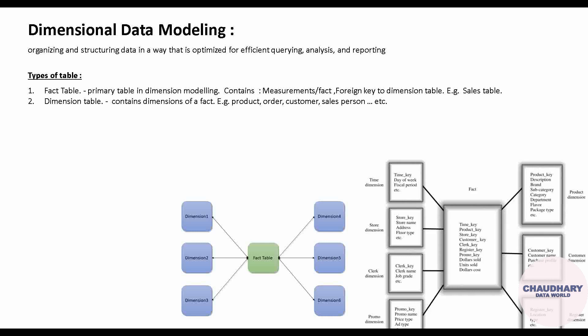Now let me show a more detailed example. Suppose this is a fact table in which you are keeping a record with keys like time key and product key. This is your sales table, and it has different dimension tables — store dimension, clerk dimension, promo dimension, product dimension, customer dimension, and register dimension. All these minute-level details are captured in separate tables, and those are then mapped to the summary fact table, which contains all the keys. This brings up a new concept — the key in the fact table is called a foreign key referencing the dimension table.